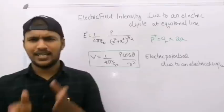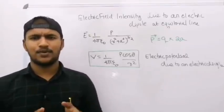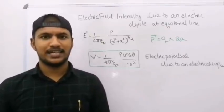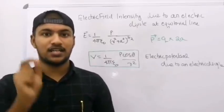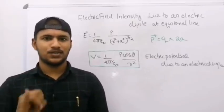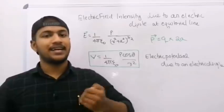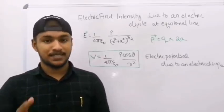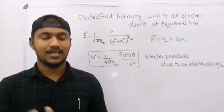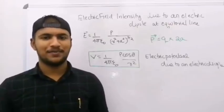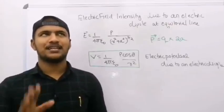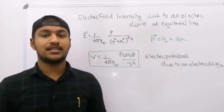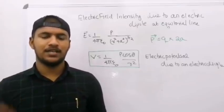Electric Dipole — axial line, equatorial line, equatorial line intensity. That's one chapter. Electric Potential and Capacitance — chapter Electric Potential and Capacitance.